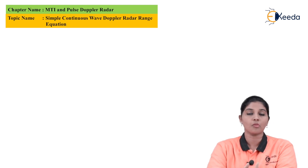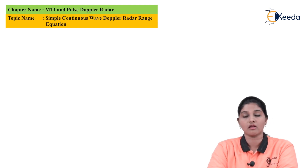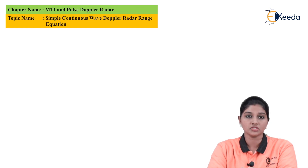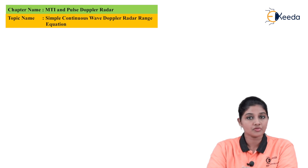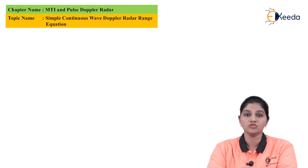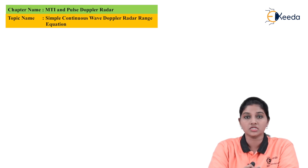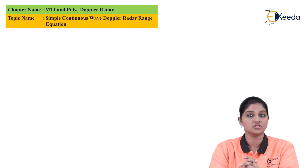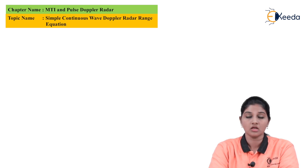Let's discuss first the operating principle of continuous wave radar. The continuous wave radar uses the Doppler frequency shift for detecting the moving target. In continuous wave radar, the signal is transmitted continuously by using the same antenna. The name continuous wave indicates that the radar uses an unmodulated carrier signal which is transmitted and received directly by the antenna.